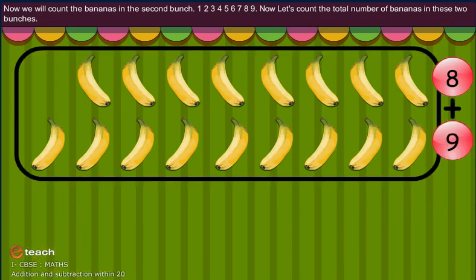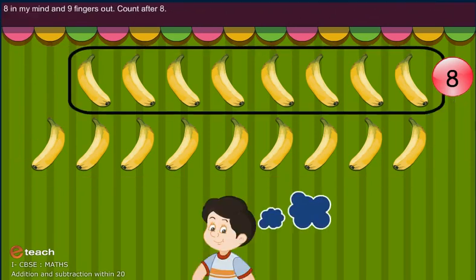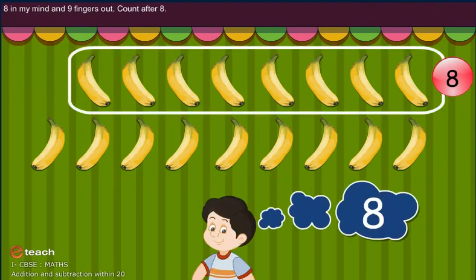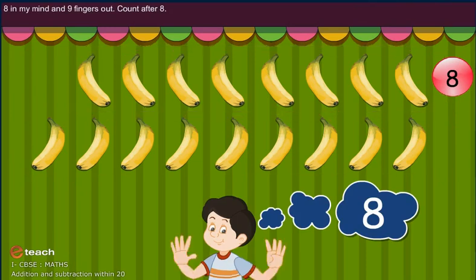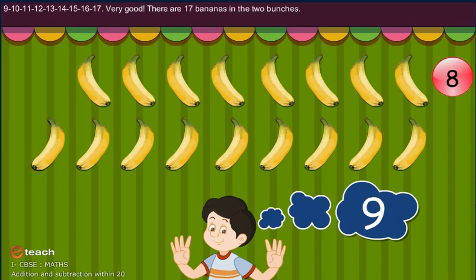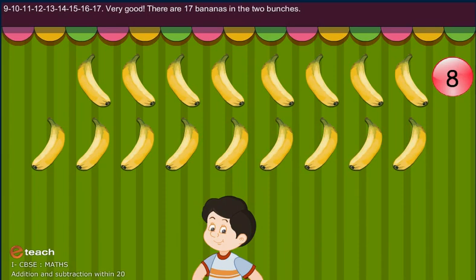Now let's count the total number of bananas in two bunches. 8 in my mind and 9 fingers out. Count after 8: 9, 10, 11, 12, 13, 14, 15, 16, 17. Very good!